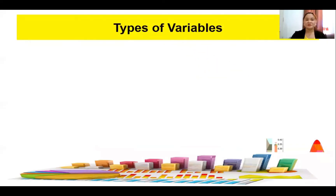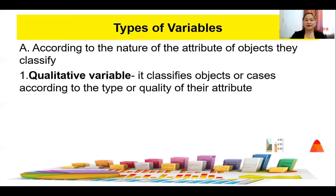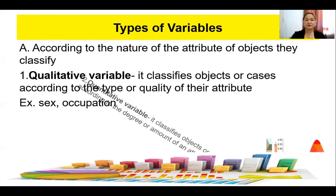We have types of variables. First, classification according to the nature of the attributes of the object they classify. So we have qualitative and quantitative.